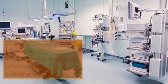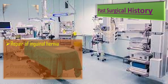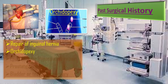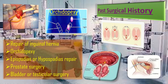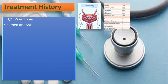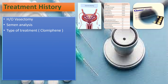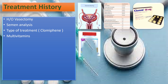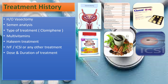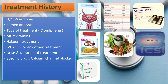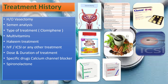In the past surgical history, ask about repair of inguinal hernia or orchidopexy — a surgical procedure that moves an undescended testicle into the scrotum — epispadias or hypospadias repair, and any prostate, bladder, or testicular surgery. In the treatment history, ask about vasectomy, any semen analysis done, treatments like clomiphene, multivitamins, Hakeem treatment, IVF, ICSI. Ask about dose and duration, and about specific drugs like calcium channel blockers such as nifedipine, spironolactone, steroids, or chemotherapeutic drugs.